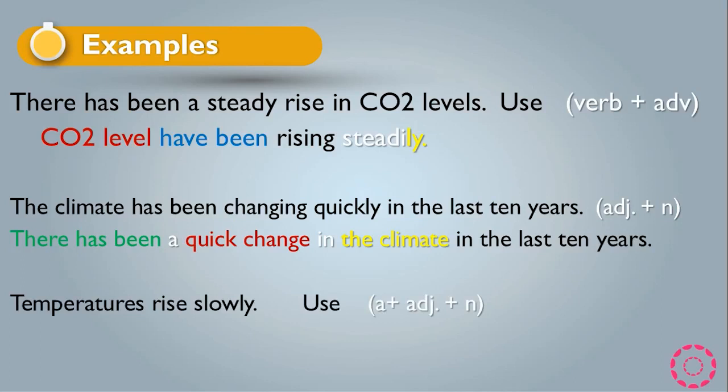Another example: 'Temperatures rise slowly.' If asked to use the adjective plus noun form, the sentence becomes: 'There is a slow rise in temperatures.'